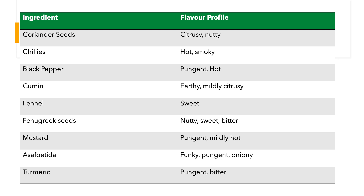Too much fenugreek would be very bitter, so use it in small quantities. Mustard has a pungent, mildly hot taste. Asafoetida has a funky, pungent, oniony taste. Turmeric has a pungent and bitter flavor profile. When you really think about all of this, you add the right mix of spices to get the kind of flavor profile you want. As you train your nose and learn to recognize these flavors and develop a vocabulary for them, you'll become a better cook — able to conjure up spice mixes that really work for the dish you're aiming to make.